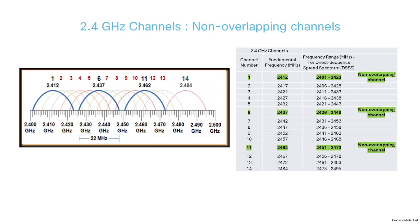The following visual shows that the channels in the 2.4 GHz band are spaced 5 MHz apart. Channel 1 has a frequency range from 2401 MHz to 2423 MHz. Channel 5, with its starting frequency of 2421 MHz, overlaps with channel 1. But channel 6 starts at 2426 MHz, which doesn't overlap with channel 1. Similarly, channel 11 starts at 2451 MHz and doesn't overlap with channel 6.